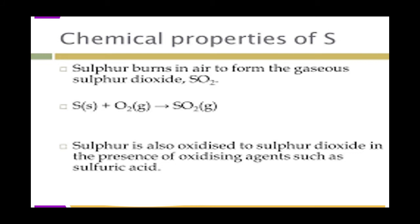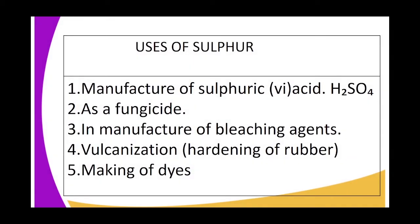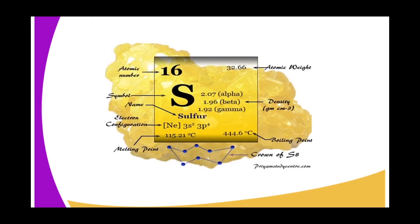The uses of sulfur include: it is used to manufacture sulfuric acid (H₂SO₄); it is used as a fungicide to kill fungi; it is used to manufacture bleaching agents used to bleach wood pulp in the paper industry; it is used in vulcanization or hardening of rubber, whereby rubber is hardened by mixing it with sulfur; and it is used in the manufacture of dyes and in making fireworks.